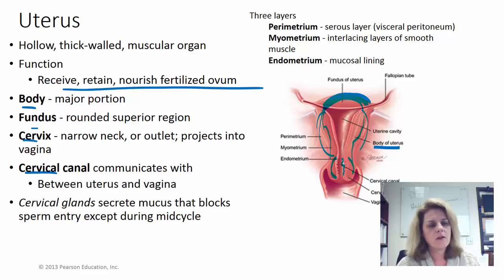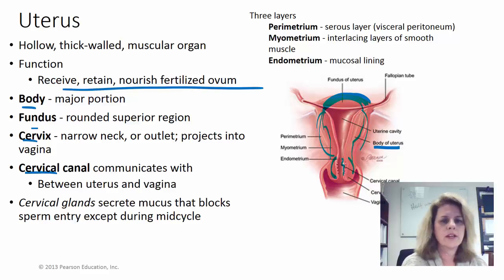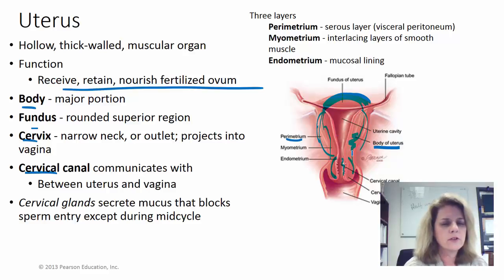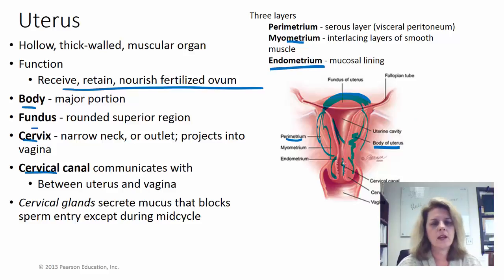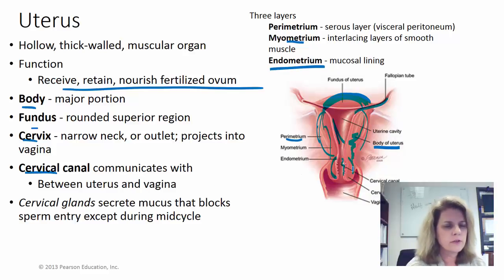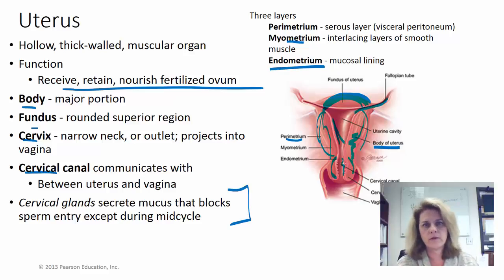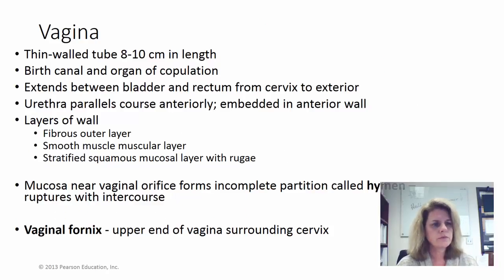The uterine wall has three layers. The outside layer is like the visceral peritoneum and is called the perimetrium. The muscular layer is called the myometrium. The inside mucosal layer — which sloughs off every month during your period — is the endometrium, and it is continuous with the fallopian tubes. In the cervix there are cervical glands that make mucus to help block the cervix from foreign invaders, forming what's known as a cervical plug.